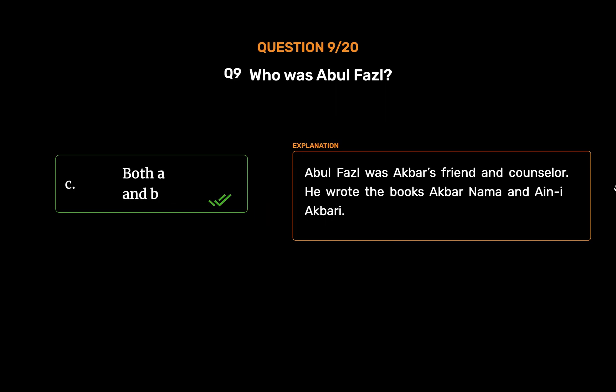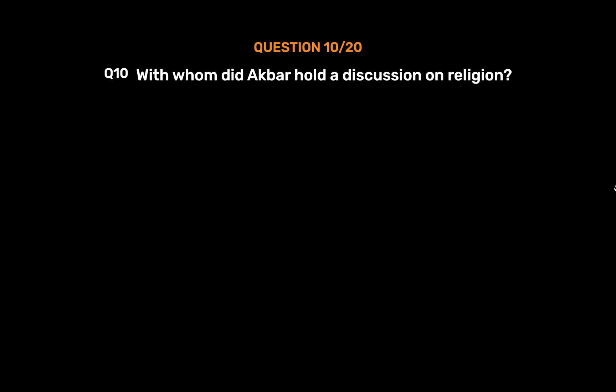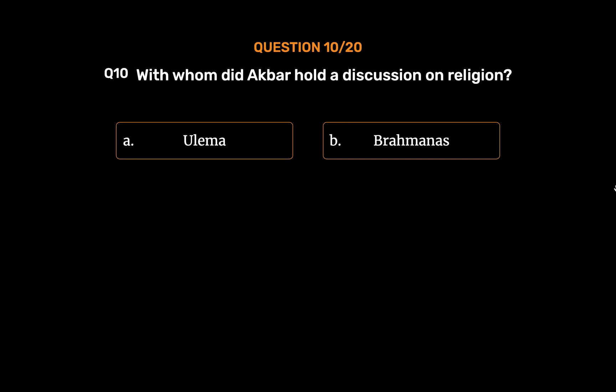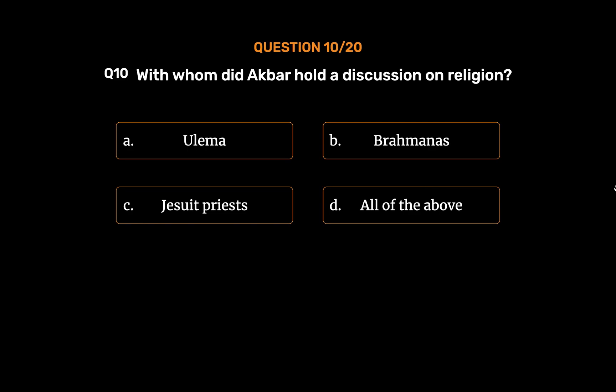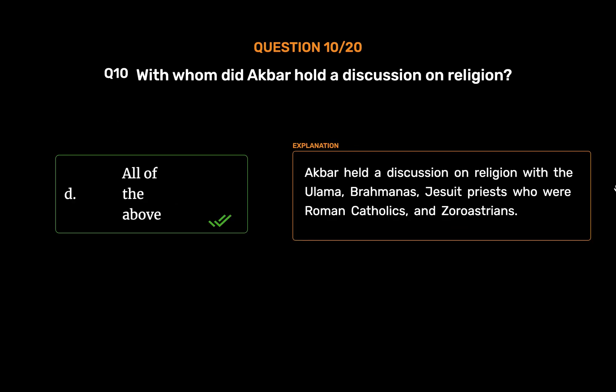He wrote the books Akbar Nama and Ain-i-Akbari. Question 10: With whom did Akbar hold a discussion on religion? Option A: Ulama. Option B: Brahmanas. Option C: Jesuit priests. Option D: All of the above. The correct answer is Option D, All of the above. Akbar held discussions on religion with the Ulama, Brahmanas, Jesuit priests who were Roman Catholics, and Zoroastrians.